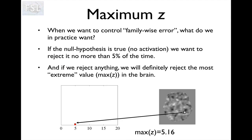In order to understand the maximum z-statistic, we're going to do the same thought experiment as we did in the last talk. Imagine that we have unlimited time, unlimited money, and we can just keep repeating the same experiment — an experiment where we know that the null hypothesis is true everywhere, i.e. there is no activation. When we want to control family-wise error, we want to find a threshold such that when we reject the null hypothesis, only in five percent of the studies do we do that.